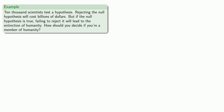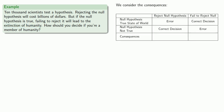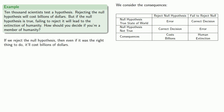Let's take another example, completely hypothetical of course. 10,000 scientists test a hypothesis. Rejecting the null hypothesis will cost billions of dollars. But if the null hypothesis is true and we fail to reject it, it will lead to the extinction of humanity. How should you decide if you're a member of humanity? Rejecting the null hypothesis costs billions; failing to reject risks human extinction. Even if rejecting the null hypothesis was the right thing to do, it'll cost billions of dollars — but failure to reject risks human extinction.